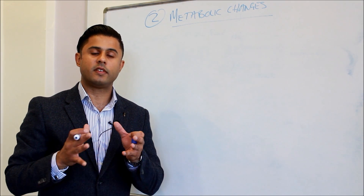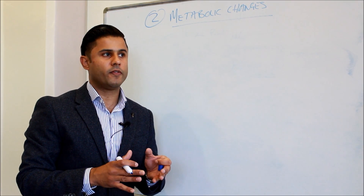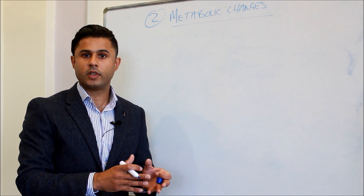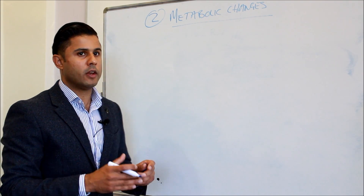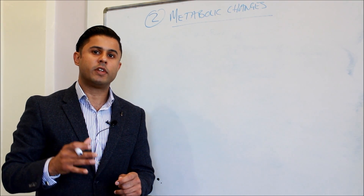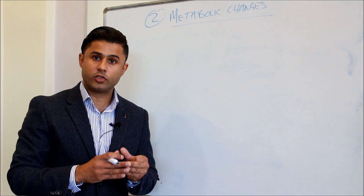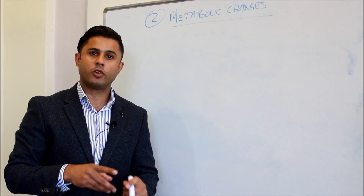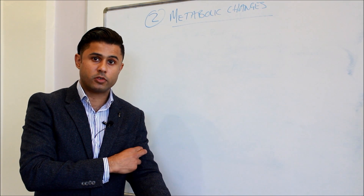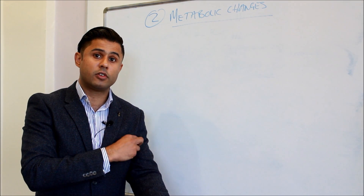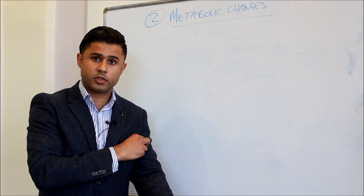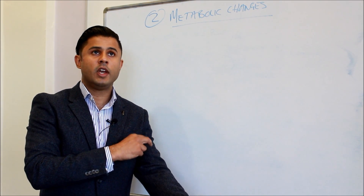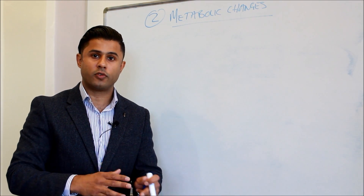Glycolysis is the main source of energy production and it obviously requires oxygen. What happens normally in a working muscle is that you get a reduction in the oxygen levels because it's being used up, and that then sends a signal. The actual blood vessels within the muscle, the micro vessels, will send the signal to the arterioles, and this is called flow motion - they actually send a low frequency oscillation.